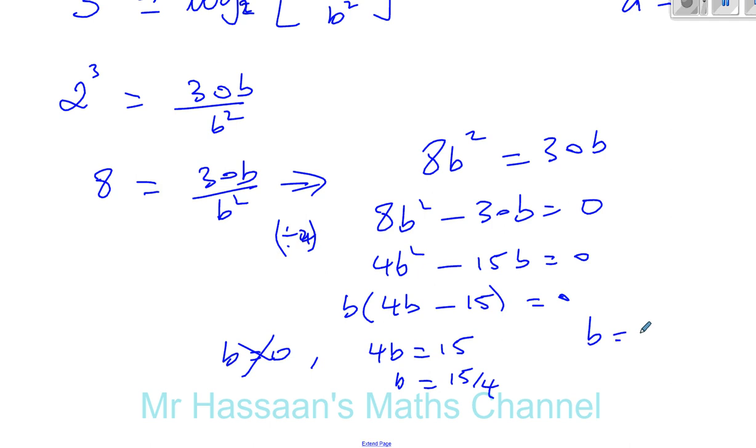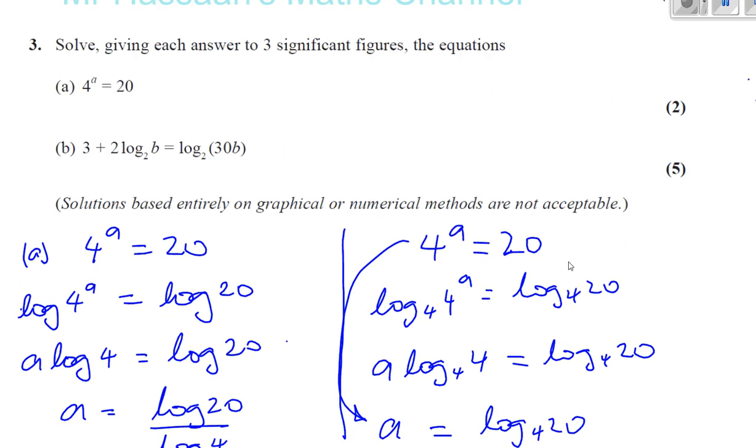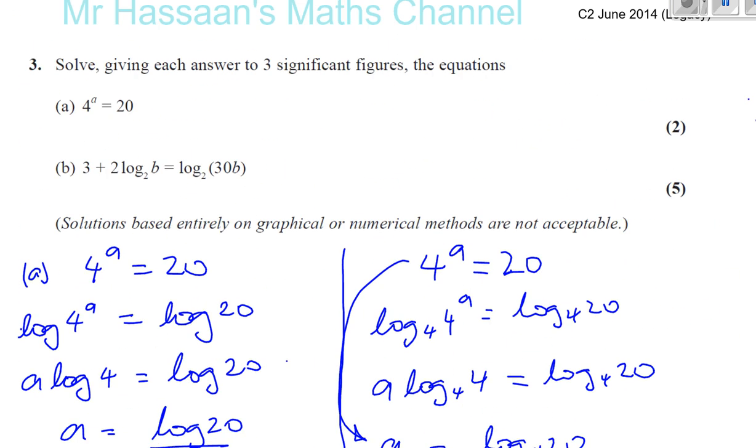My answer is B equals 15 over 4. Okay, there is the answer to this question. Okay, we can't have both answers there. So there we are. That's question number 3 done. I hope that was clear.